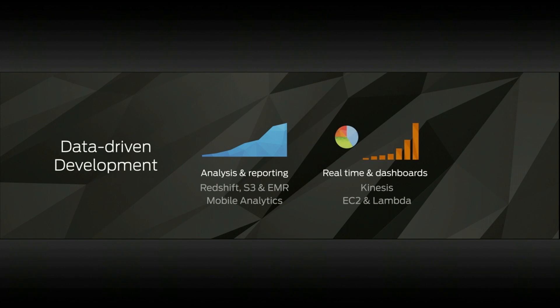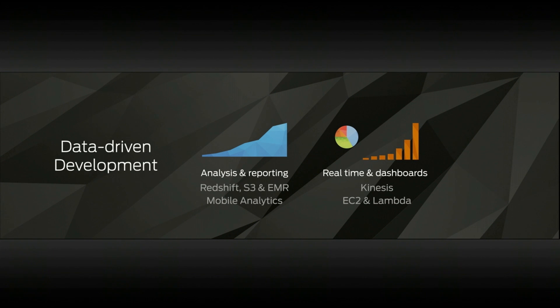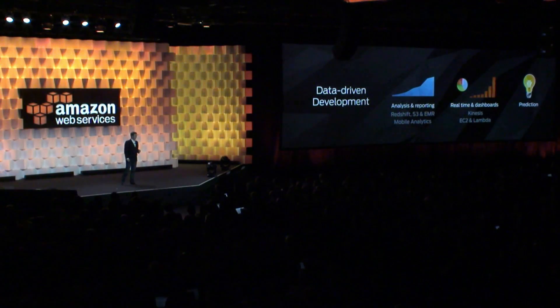The second thing they're doing is looking at the real-time operations of their infrastructure and what's happening in real-time in their applications, their games, and on their mobile applications — streaming events directly from those applications into Kinesis and processing them on EC2 or Lambda. But there's another area developers are more and more interested in: looking at predictions of things that haven't happened yet, events that will happen in the future.